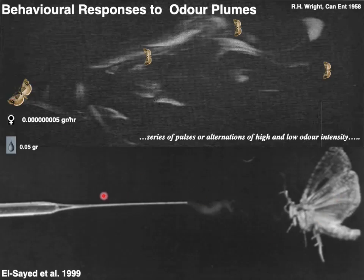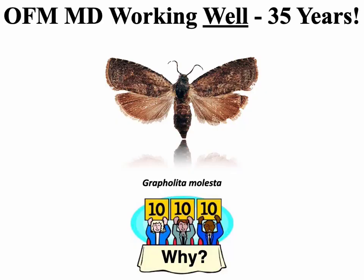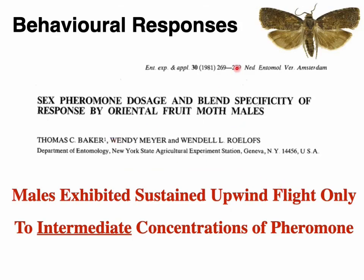An electropiezo sprayer vibrates at very high intensity and sends a pheromone signal that the male follows upwind in pursuit of it. OFM mating disruption has been working very well for the last 35 years. What is it about mating disruption for OFM that makes it so robust? I went back and looked at a paper by Tom Baker and Wendell Roloffs from 1981 entitled 'Sex Pheromone Dosage and Blend Specificity of Response by OFM Males.'